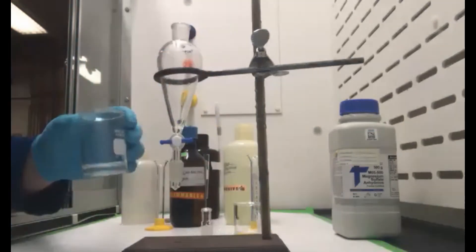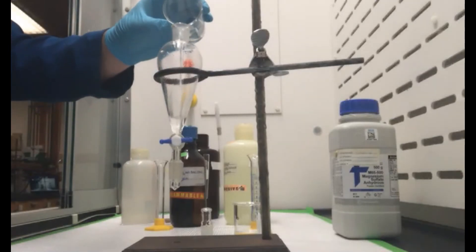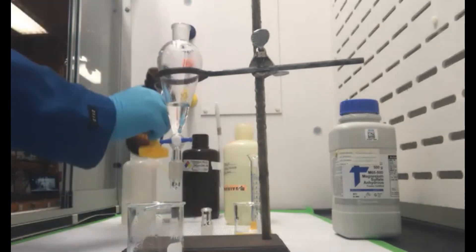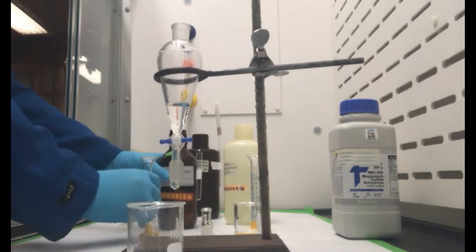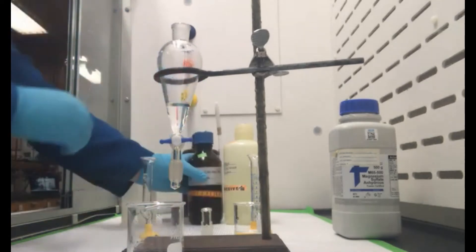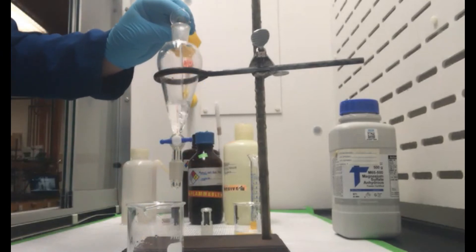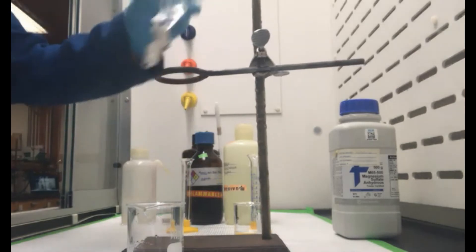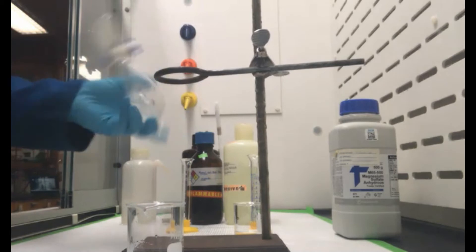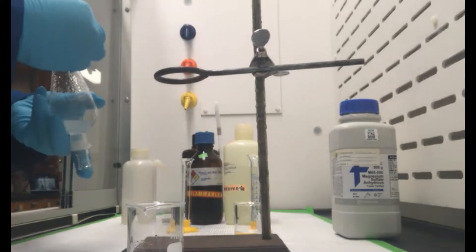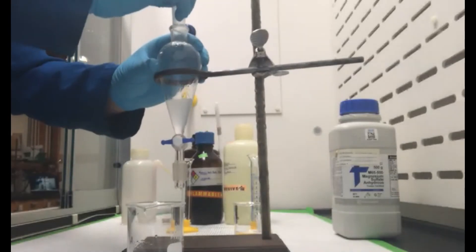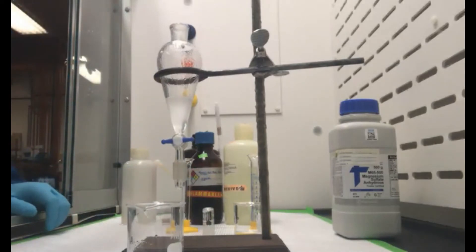Now I want to extract again from my water. I'm going to add the water back to the sep funnel. And we're going to use another five mils of MTBE and do our extraction again. I'll let these layers go ahead and separate out.